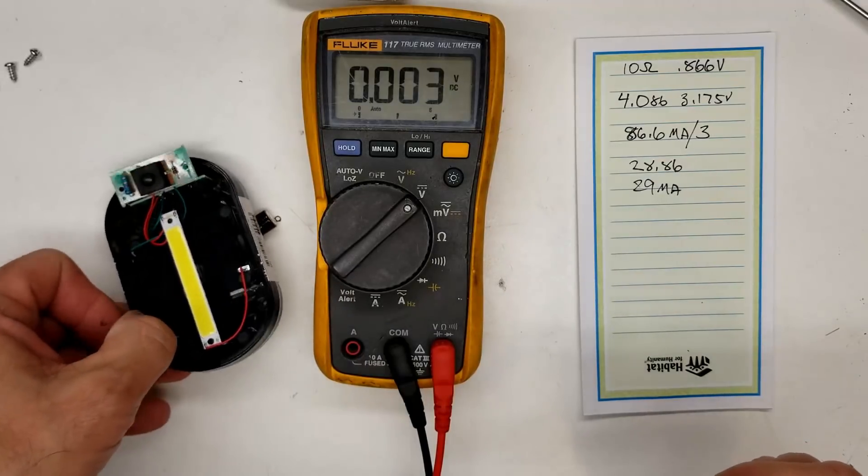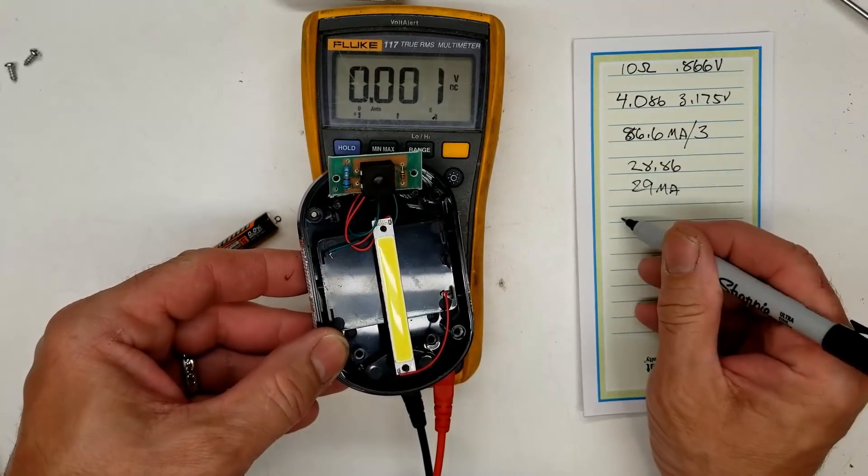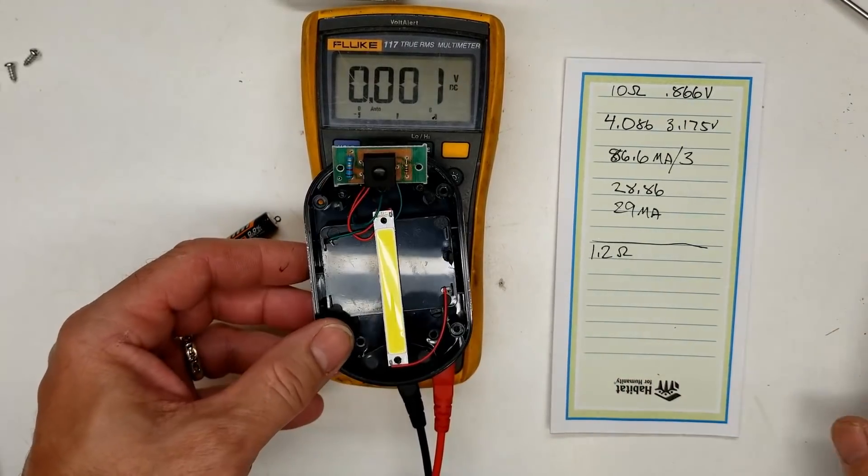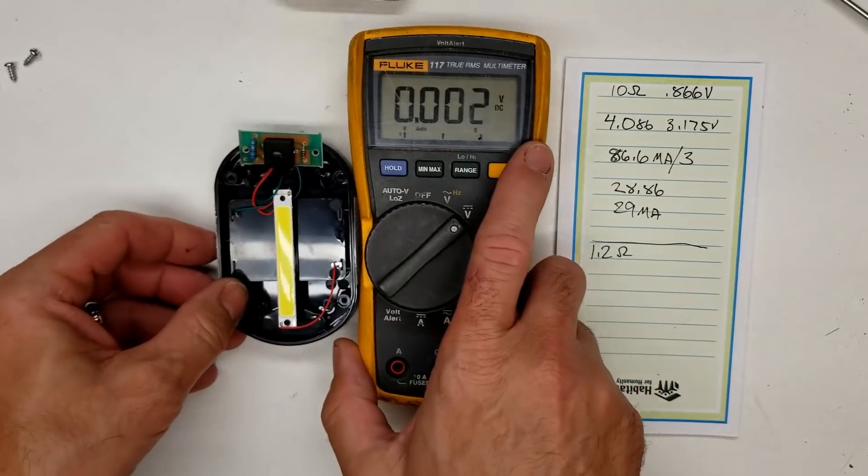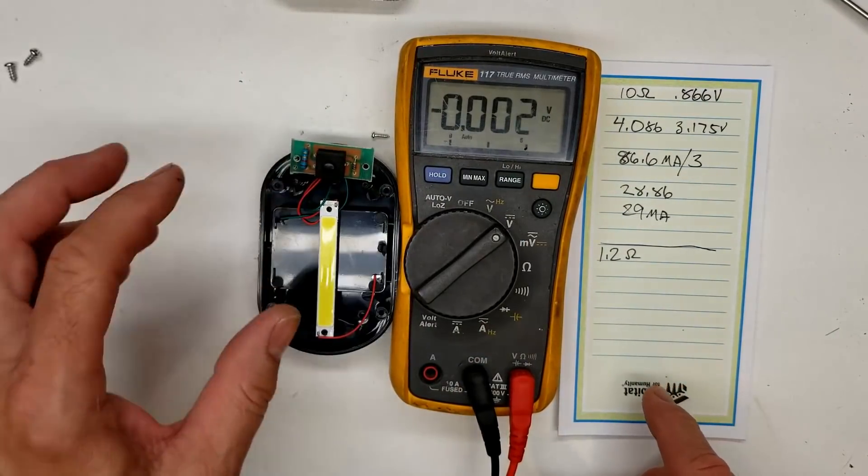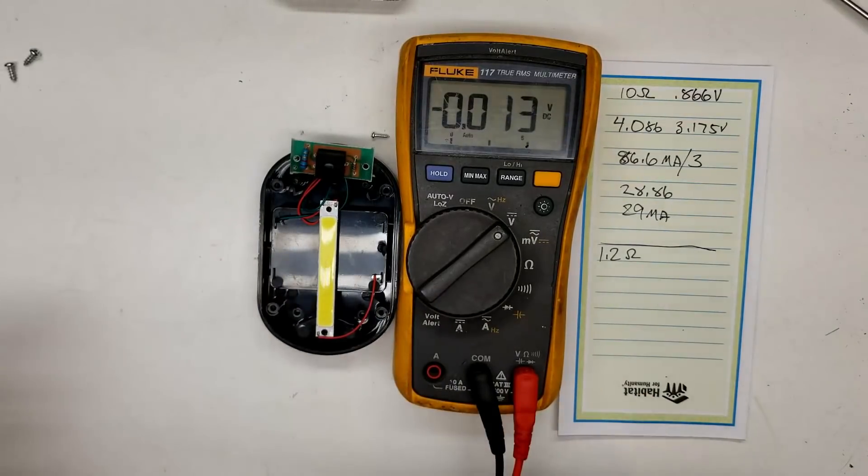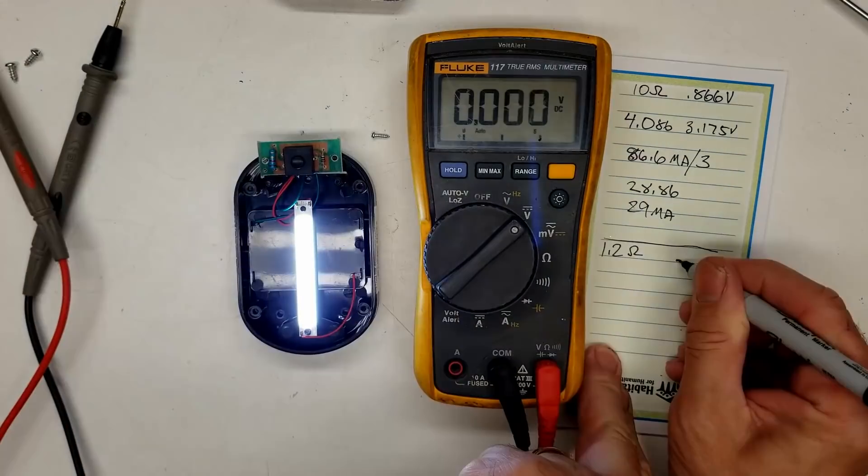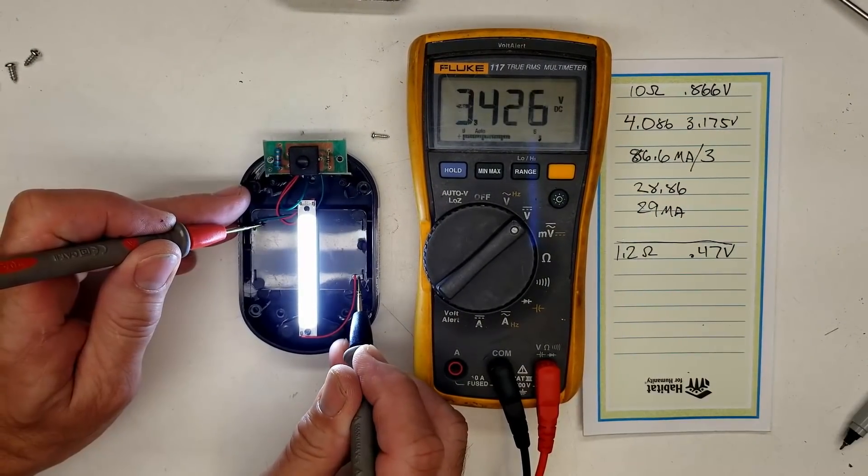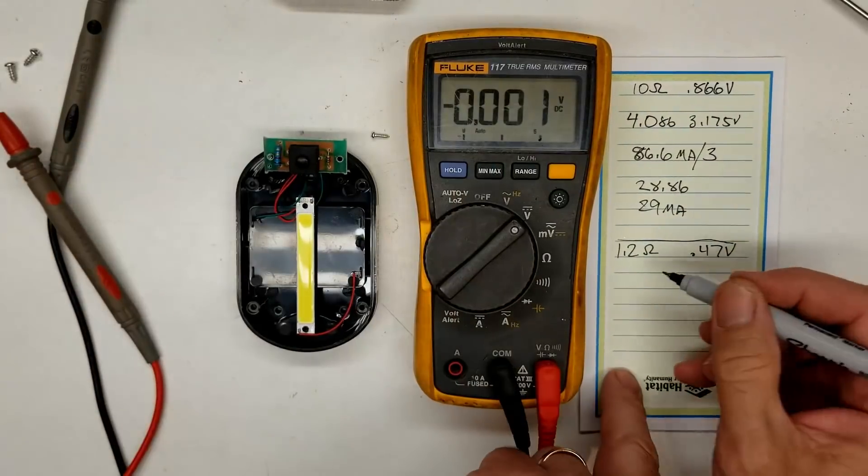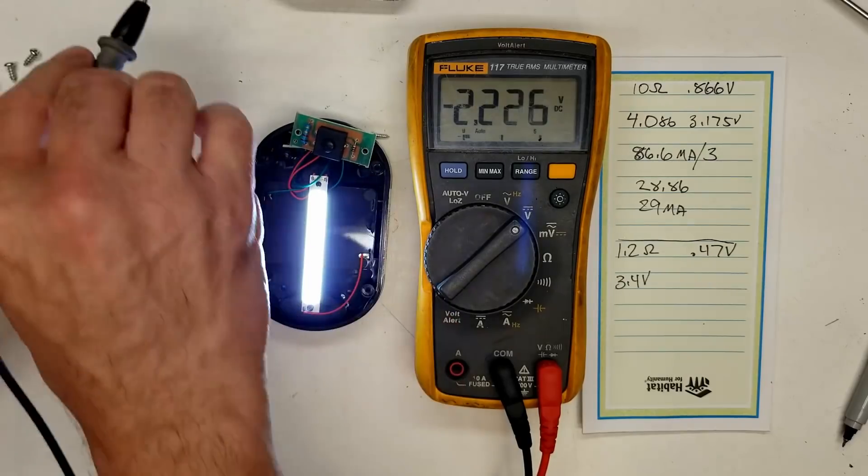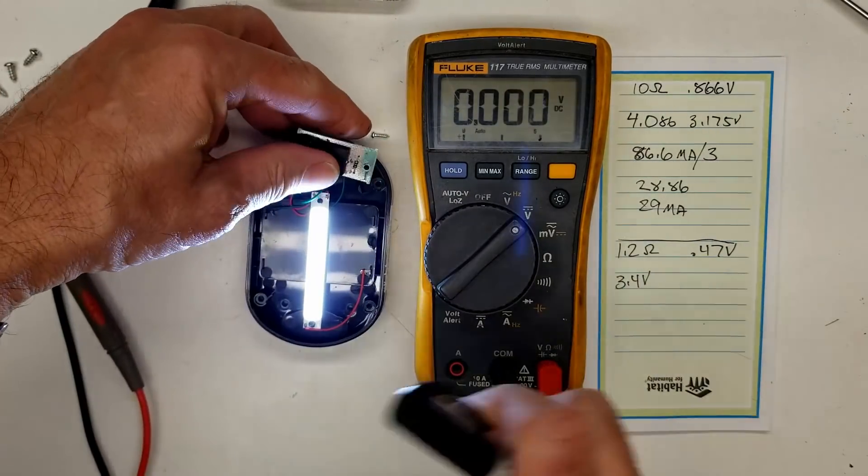And now we're dropping the voltage by 1.2 ohms. So we have 1.2 ohms. And so let's go ahead and we'll measure the voltage across this 1.2 ohm resistor and the battery voltage as close to the same time as we can get it and try to make some calculations. The voltage across the resistor is 0.47 volts. Once again, the battery voltage at this point is 3.4 volts. So the voltage on the actual LEDs itself, 2.831 volts. Let's turn that off to save the batteries.